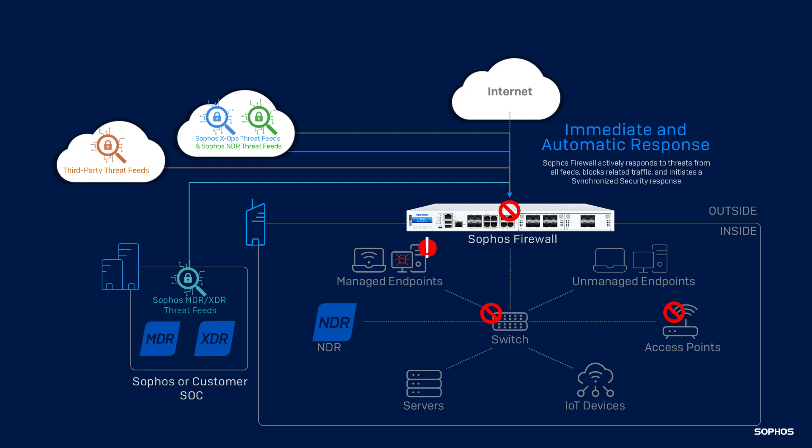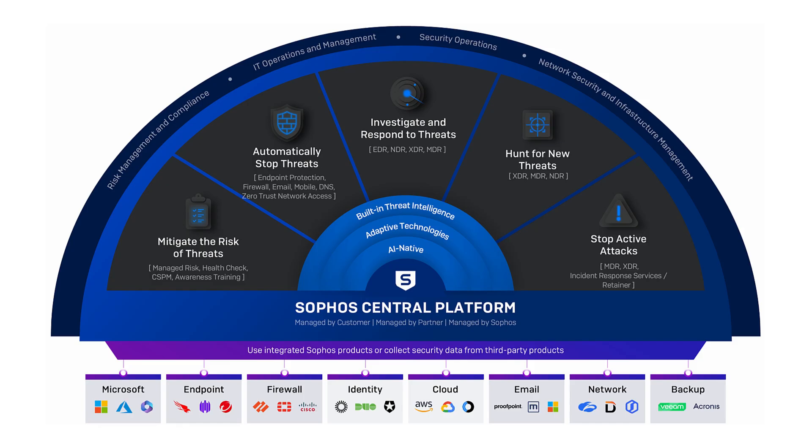But it doesn't stop there. If any managed endpoint attempts to access the malicious IOC, the firewall not only blocks the attempt, but the endpoint can then be automatically isolated. Lateral movement protection activates as well to prevent the threat from spreading across your network.